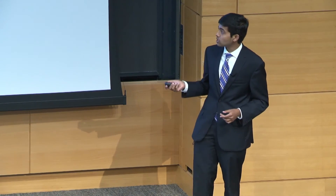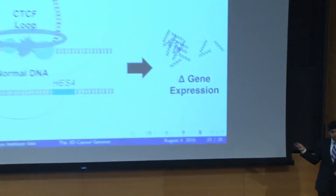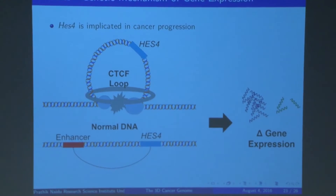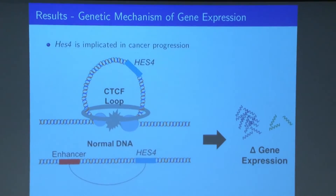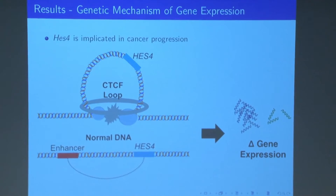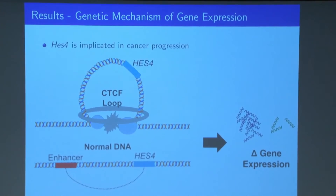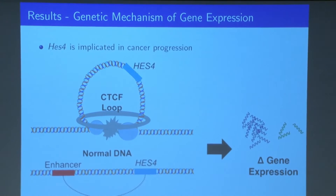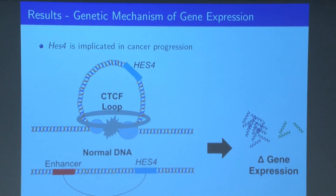For the mechanism by which they actually change gene expression: oftentimes within these loops, the HES4 gene, for example, normally associates with an enhancer. But within these loops, the enhancer is no longer interacting with that HES4 gene in that CTCF loop, and so that's why there's a change in gene expression. A second proposed mechanism is that when you have very large clusters of these CTCF loops, it becomes inaccessible for various transcription factors to attach to the gene and cause expression. That's why we see changes in gene expression with these CTCF loops.